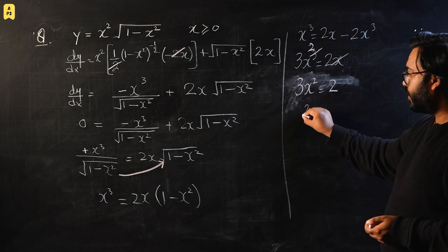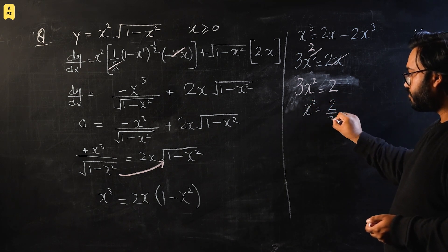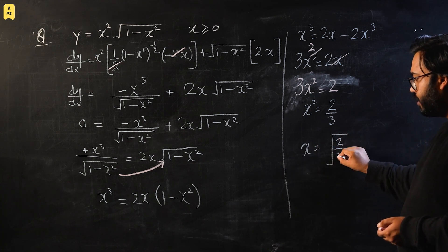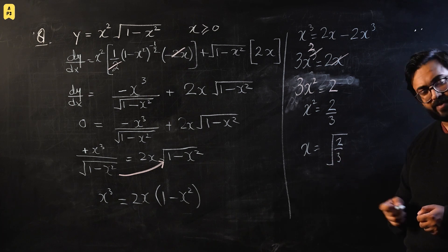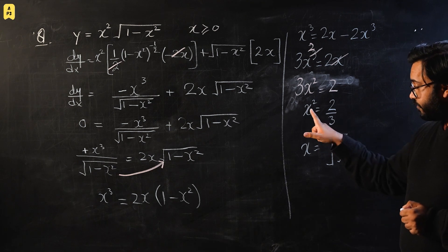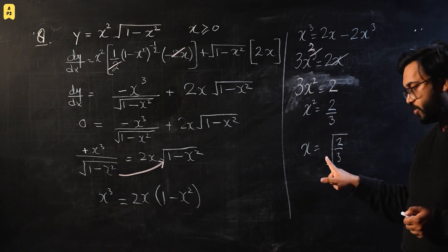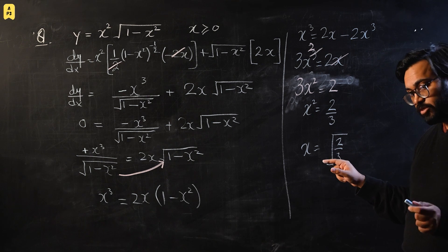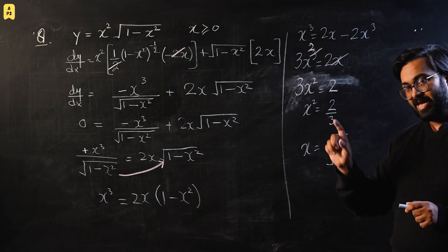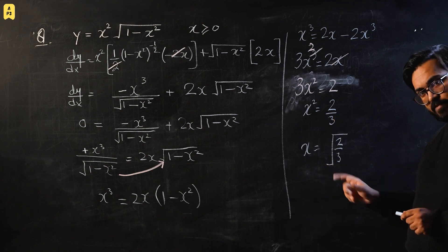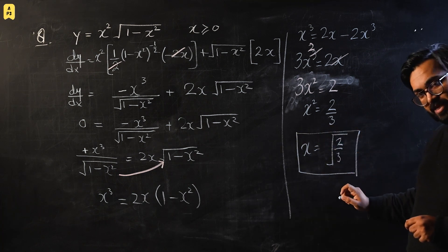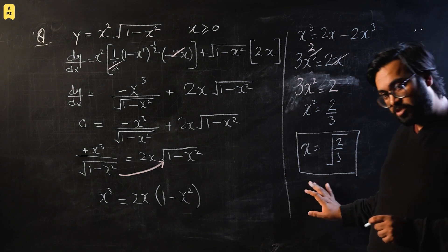So x squared equals two-thirds, and x equals the square root of two-thirds. This is the exact value of x. We do not include a plus-minus sign here because the diagram shows the x-coordinate of M is on the positive x-axis, so x must be positive. This is the exact value for part one.